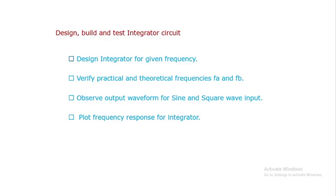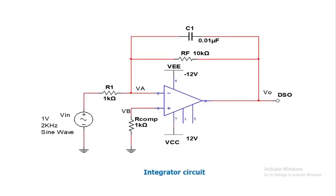This is the integrator circuit using an operational amplifier. It is nothing but a low-pass filter. The input is applied to the inverting terminal, that's why the output of this integrator circuit is always out of phase with the input. RF in parallel with C1 is present; RF is calculated as 10kΩ and C1 is calculated at 0.01 microfarad.